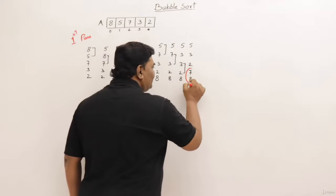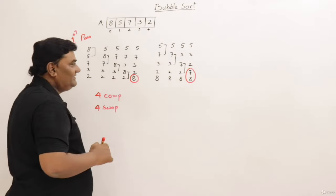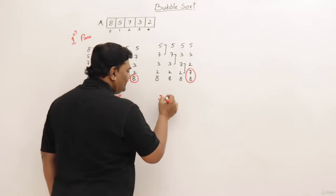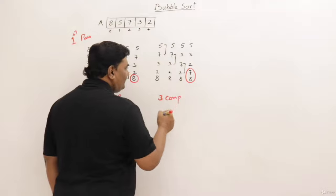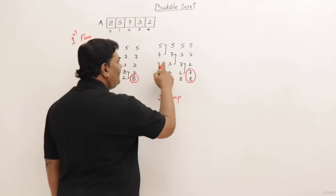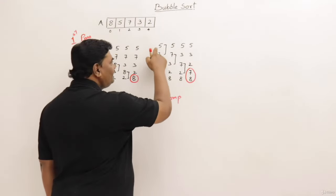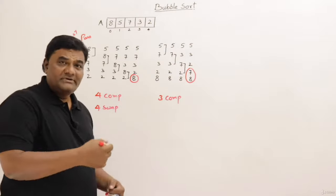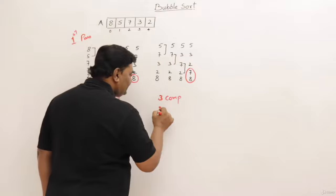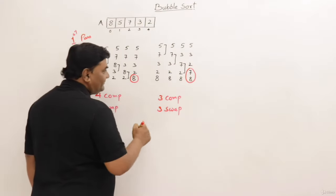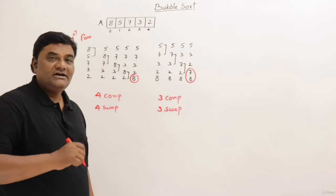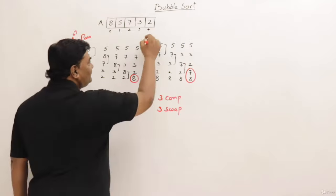After the second pass, two elements are sorted: seven and eight — the two largest elements. How many comparisons? Three comparisons. How many swaps? Just two swaps were performed. At most three swaps were possible, so I write down three as the maximum number of swaps — not the actual swaps, but the maximum possible. This completes the second pass.